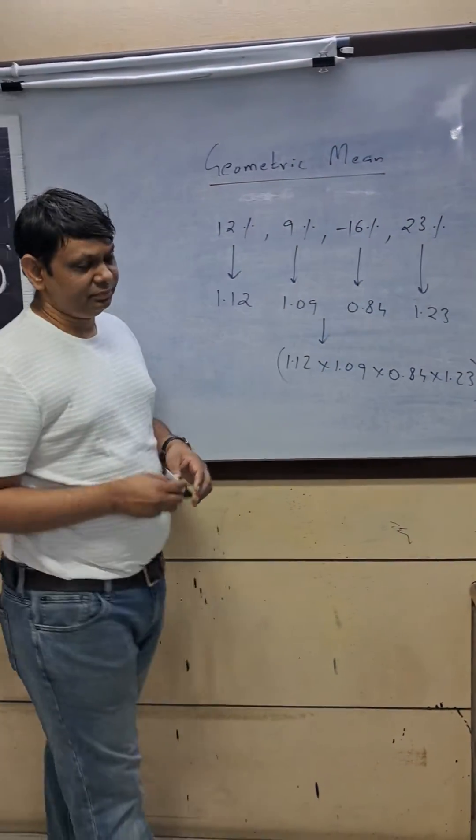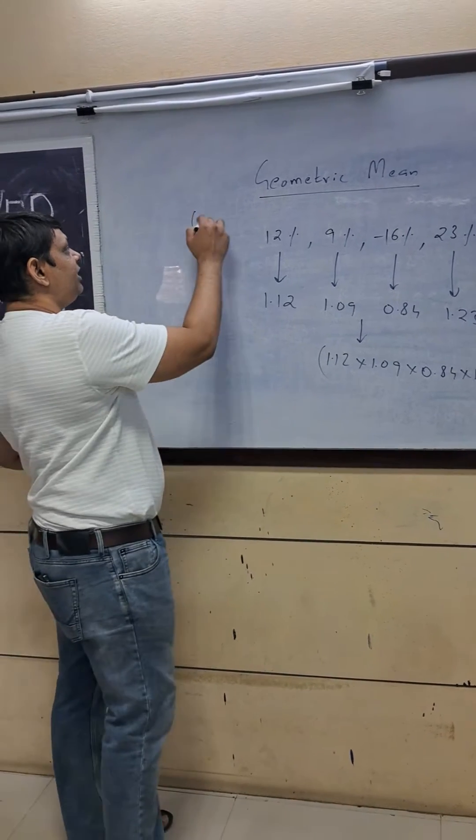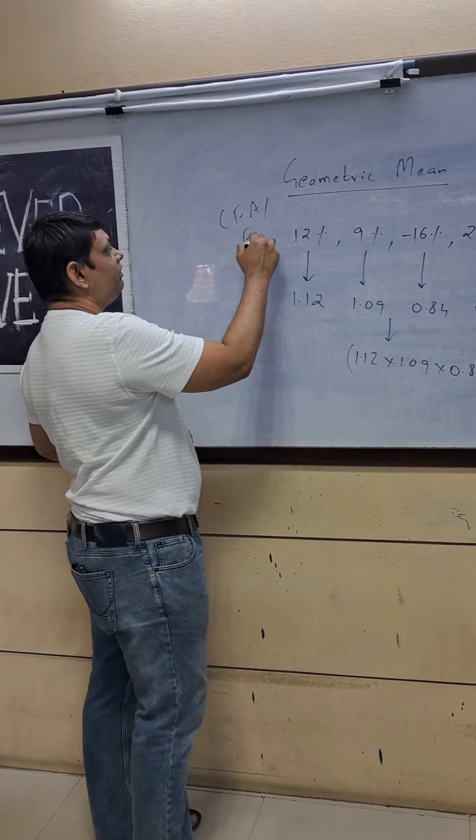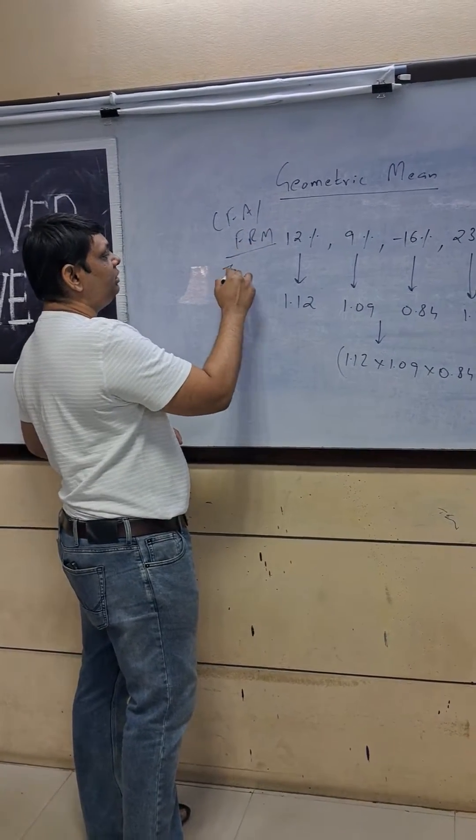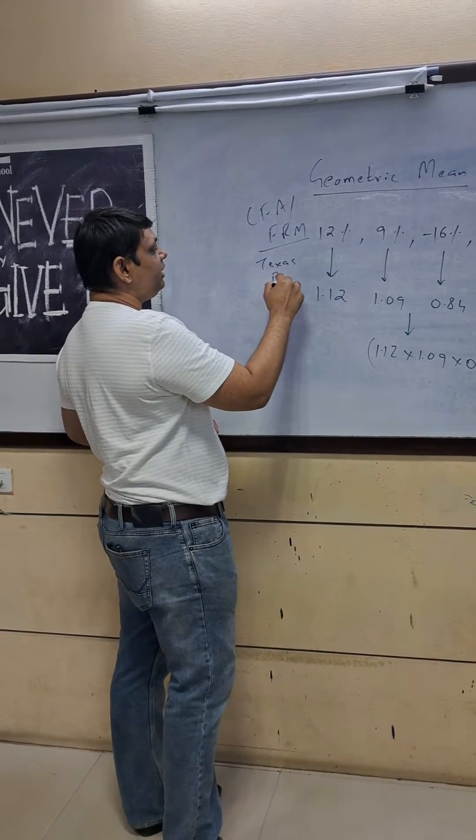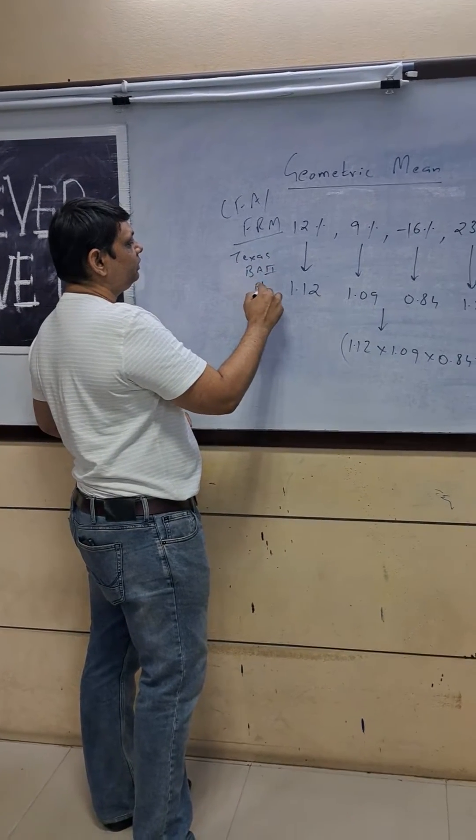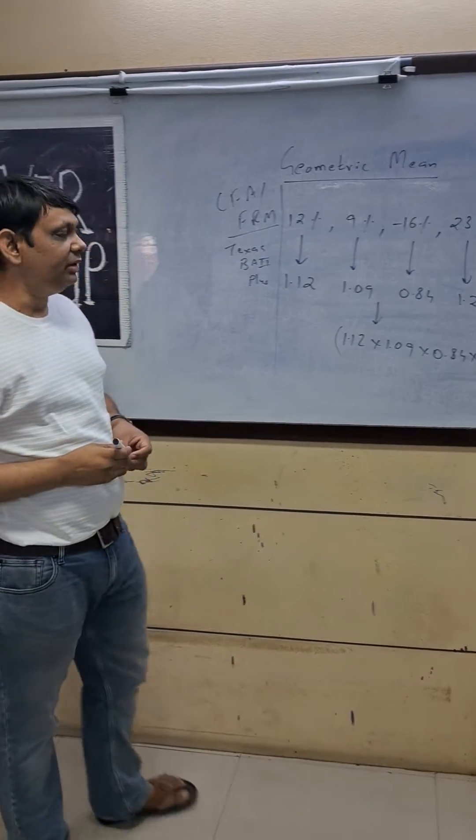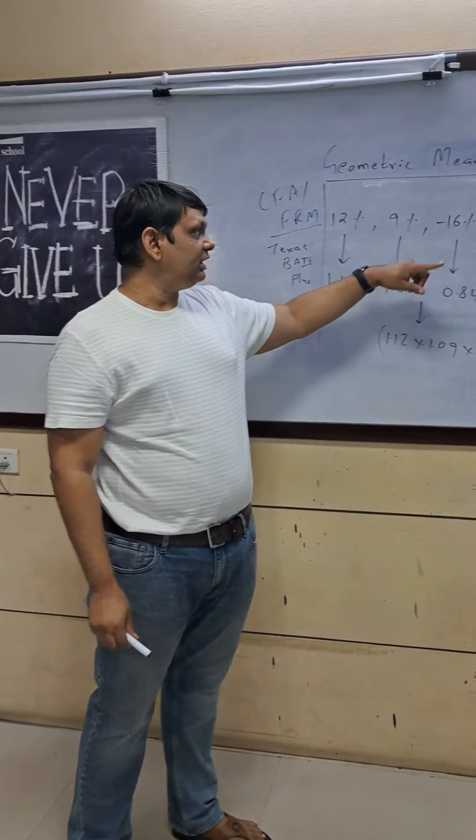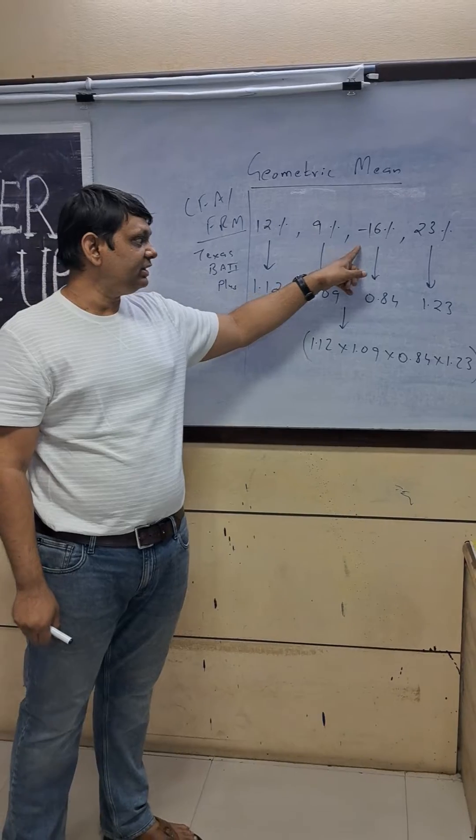When pursuing CFA or FRM, we often need to calculate geometric mean using the Texas BA II Plus calculator. Let's take an example: suppose we have returns of 12%, 9%, -16%, and 23%.